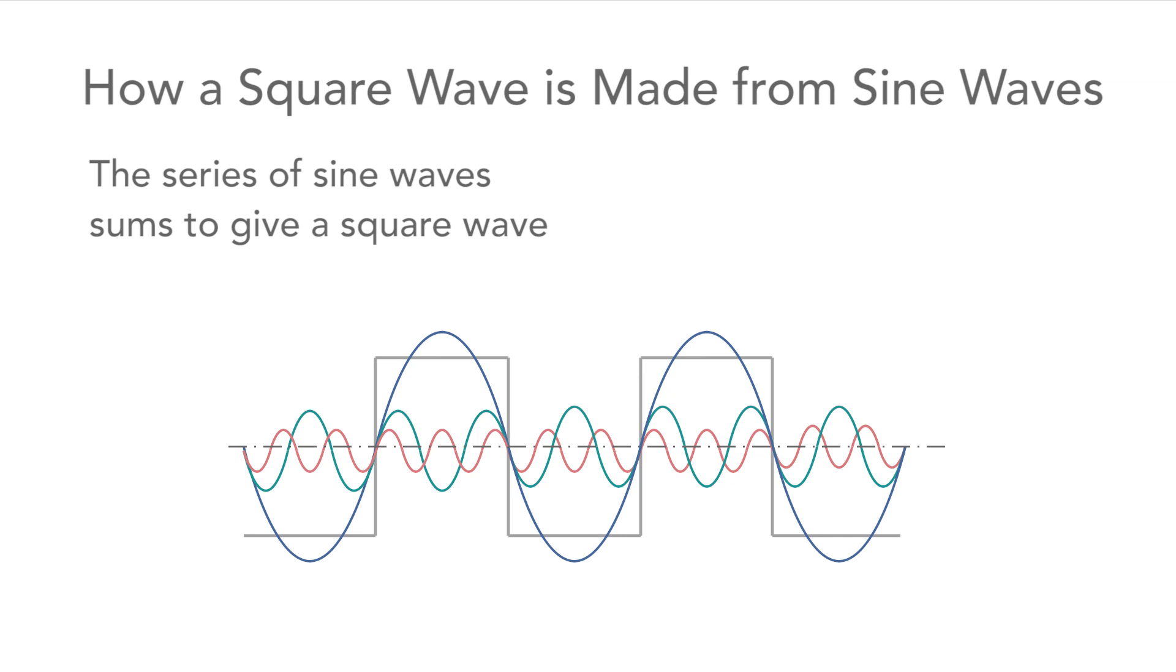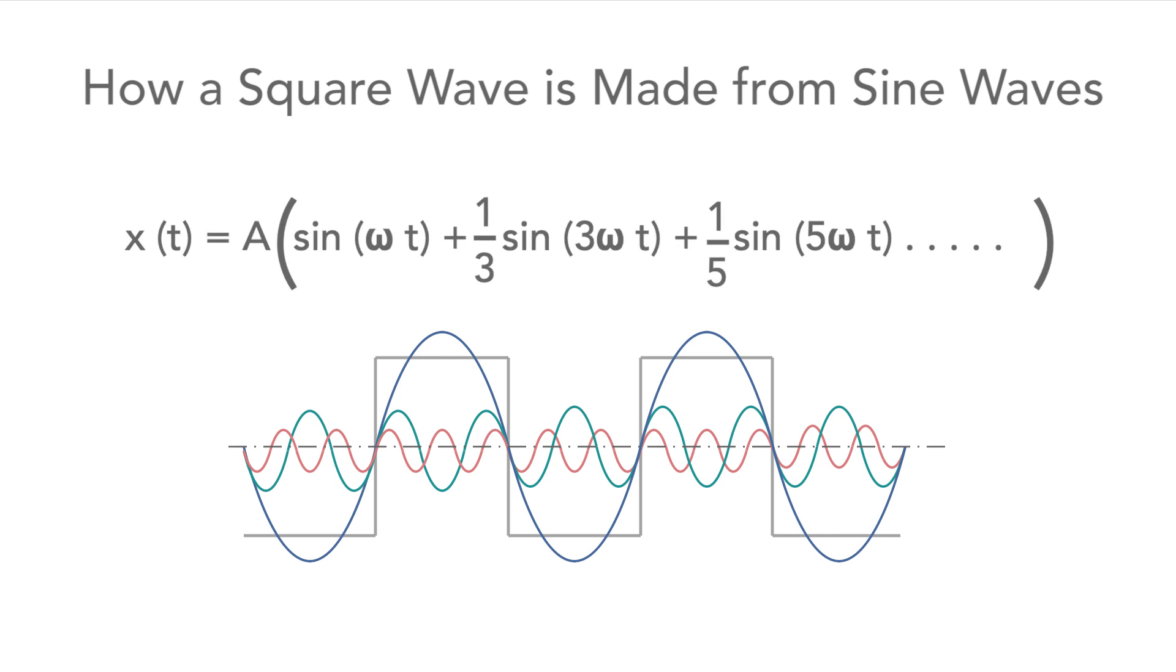The third harmonic is at a third of the level of the fundamental. The fifth harmonic is at a fifth of the level of the fundamental and so forth. The more harmonics in the series, the closer it becomes to the ideal square wave.